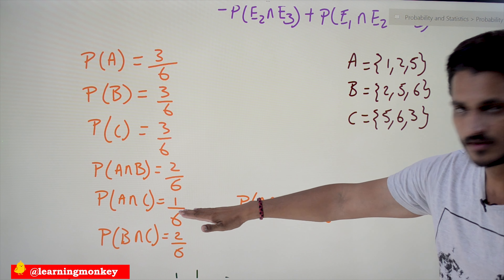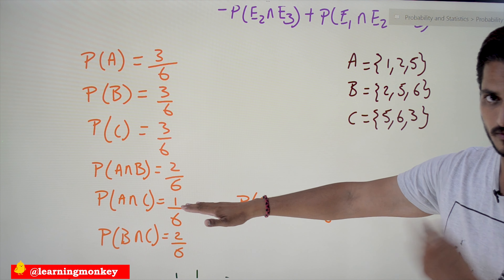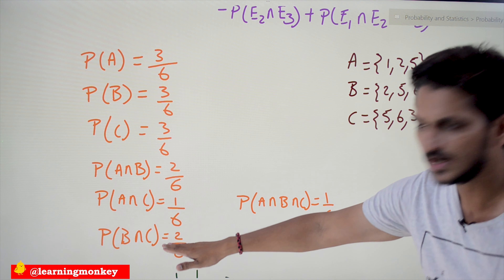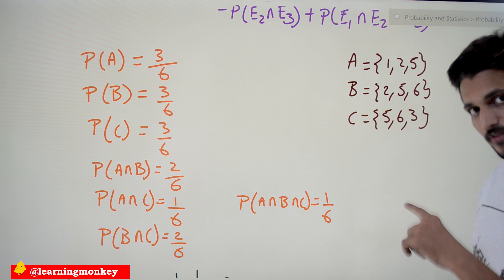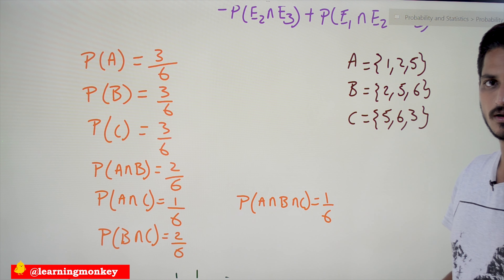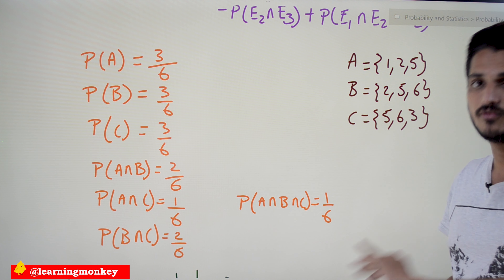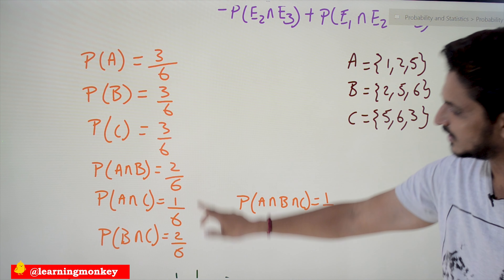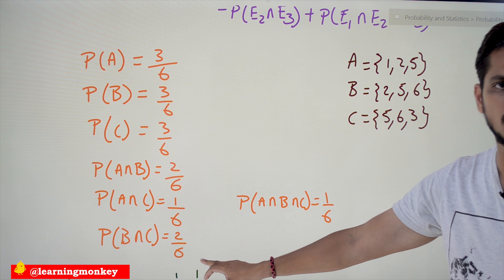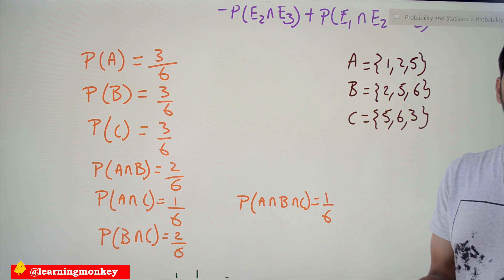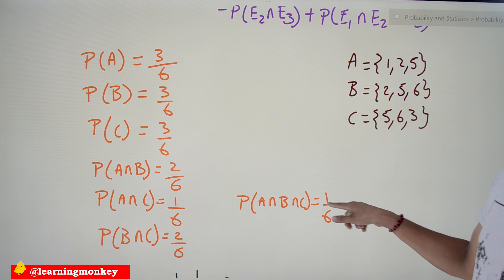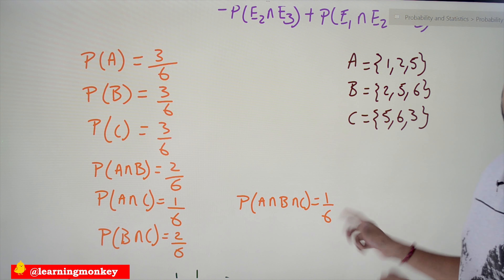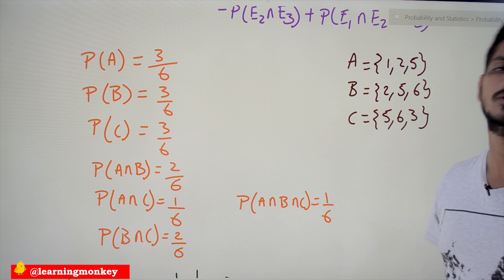After adding 5 three times and subtracting it three times, we are not involving 5 at all. That's why we must add P(A ∩ B ∩ C) = 1/6 at the end — to restore the count of element 5. This is how the inclusion-exclusion equation works for three events.